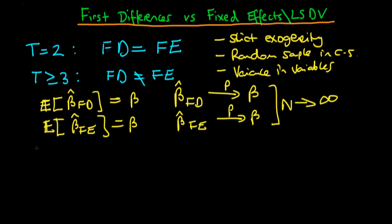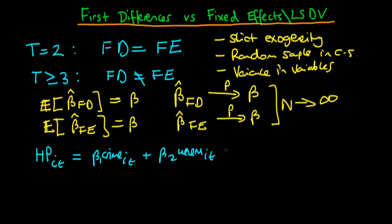Our original model, before we do any transformations, has house price in city i at time t equal to beta 1 times the crime rate in city i at time t, plus beta 2 times the unemployment rate in city i at time t, plus the unobserved heterogeneity term alpha i and our idiosyncratic error u_it.